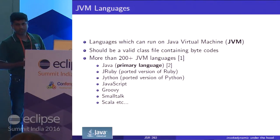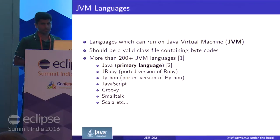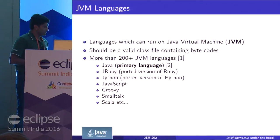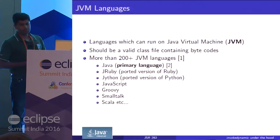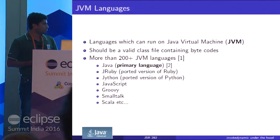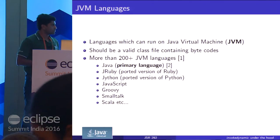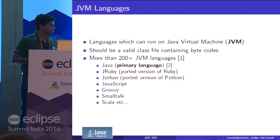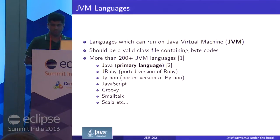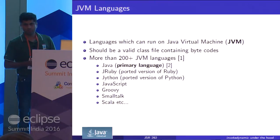There are other languages like JRuby, Jython, JavaScript, Groovy, Smalltalk — whatever language you name, it will have a JVM equivalent version.